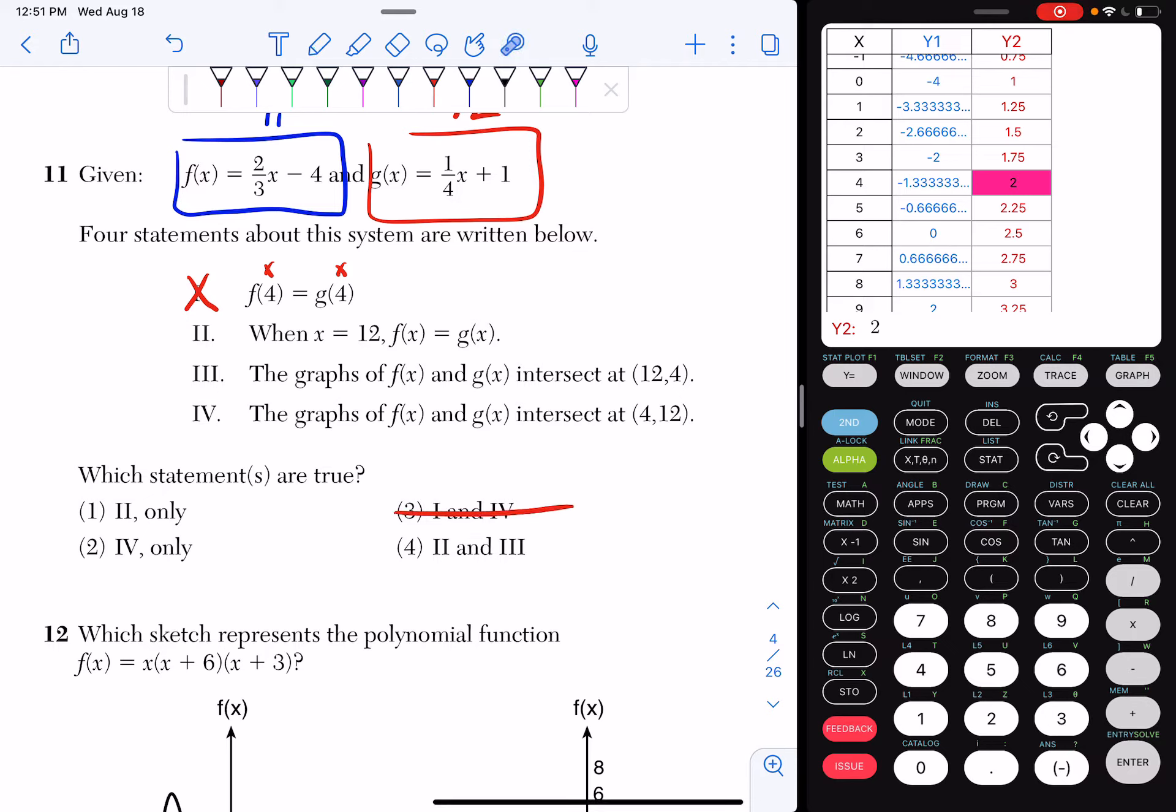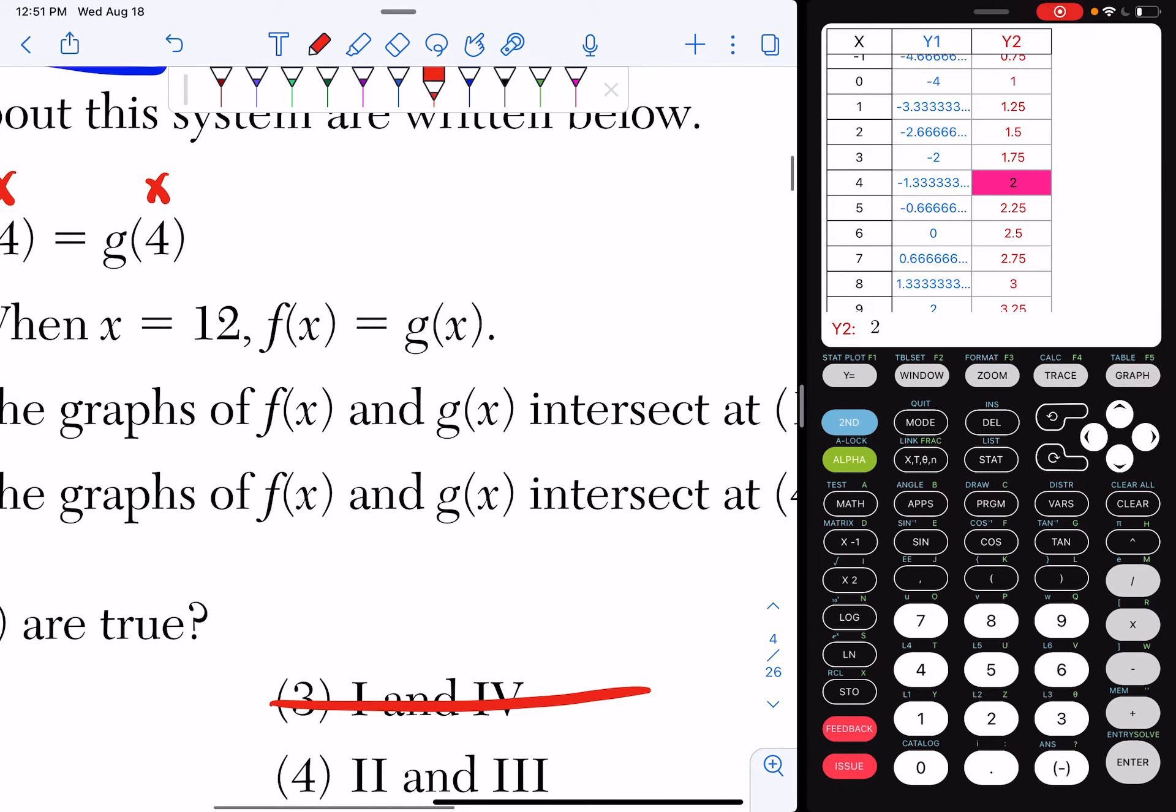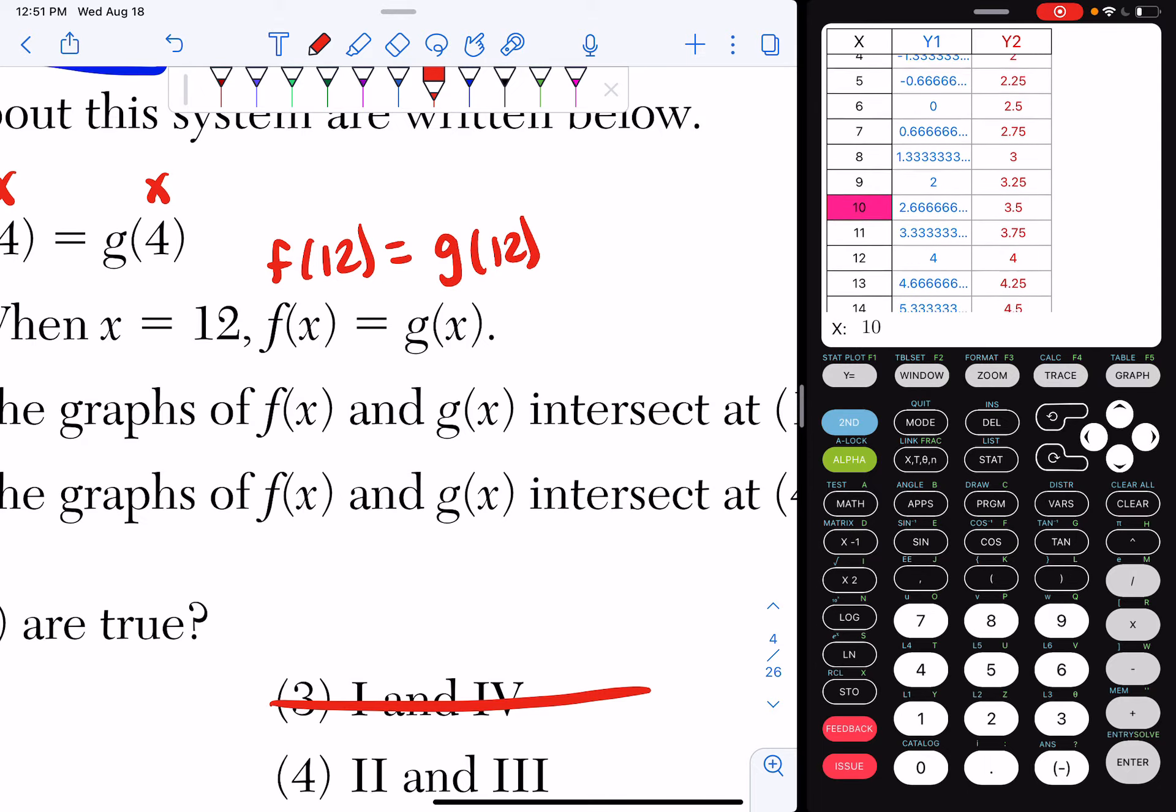Number 2, when x equals 12, f of x is equal to g of x. So what they're saying is f of 12 equals g of 12. Let's see if that's true. So I scroll down to x equals 12, and I get 4 for both of them. That is true.